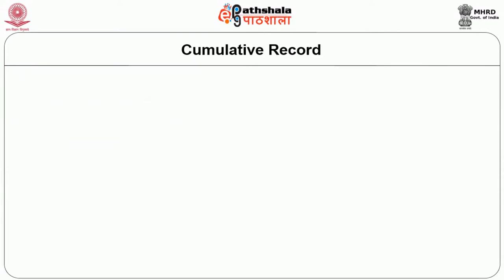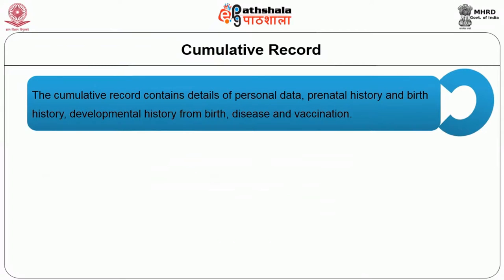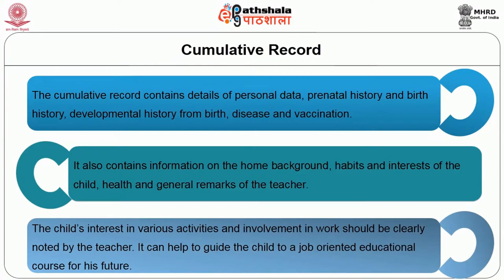The Cumulative Record maintains all the collected data about a child. It contains details of personal data, prenatal history and birth history, developmental history from birth, disease and vaccination. It also contains information on the home background, habits and interests of the child, health and general remarks of the teacher. The child's interest in various activities and involvement in work should be clearly noted, as it can help to guide the child to a job-oriented educational course for the future.